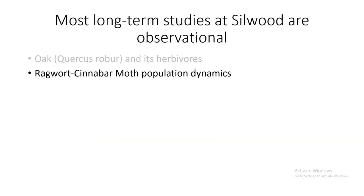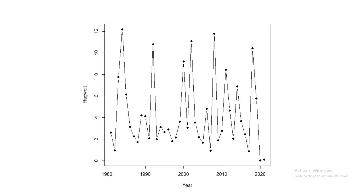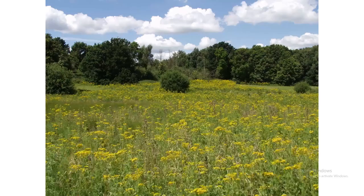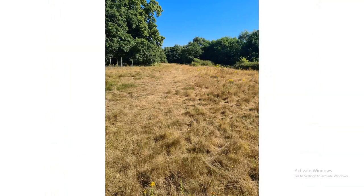The other really long-term system is cinnabar moth on ragwort. A graph shows ragwort abundance — the number of flowering stems in a 10 square meter plot — from 1980 onwards with massive fluctuation but no clear increasing trend in variance. From 2020 onwards there is basically no ragwort on the study plots. In a ragwort year you can get upwards of 10 flowering stems per square meter, whereas the same site this year had almost none, though ragwort is now coming back.